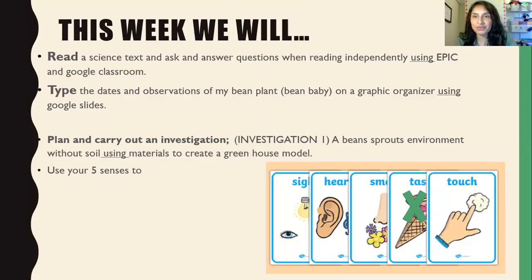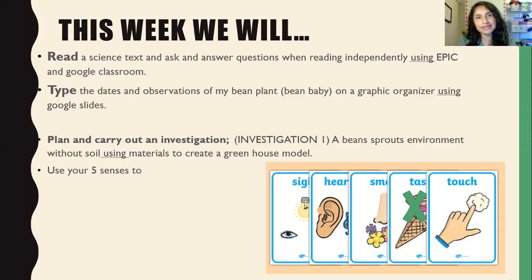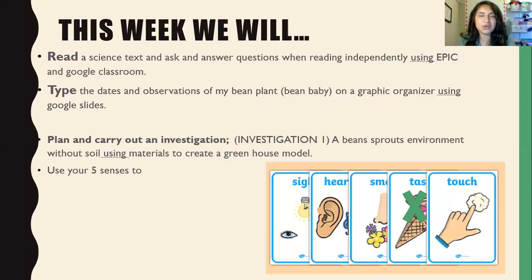These are our objectives. You are going to go ahead and read a science text and ask and answer questions when reading independently, using Epic and Google Classroom. You're going to type the dates and observations of your bean plant — I like to call them bean babies. You're going to be watching them and taking care of them. You're going to plan and carry out an investigation about your bean sprouts and their environment. And, of course, don't forget to use your five senses.